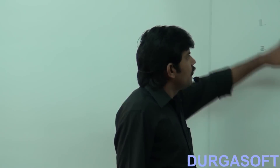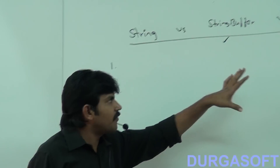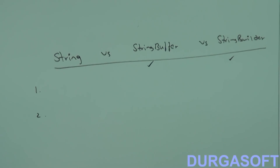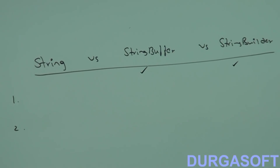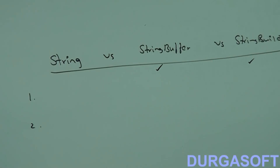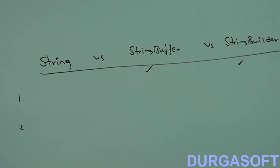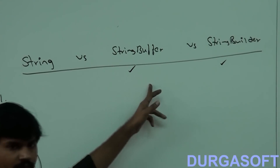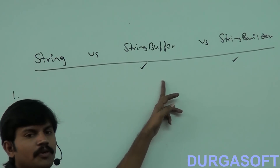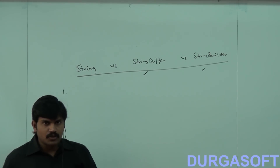This is the most valuable question for the interview. Go for String where immutability is required and content is fixed. Go for StringBuffer when content keeps changing but thread safety is required, with only one thread allowed to operate at a time. Go for StringBuilder if thread safety is not needed but mutability is required.